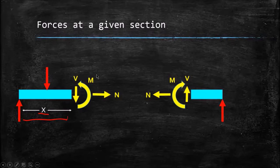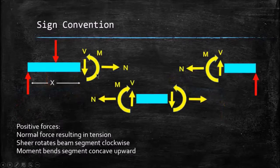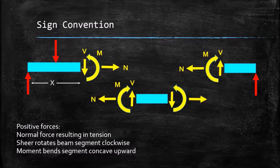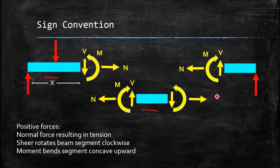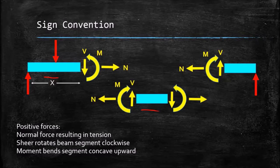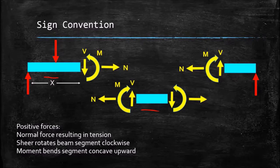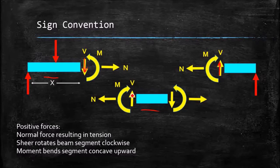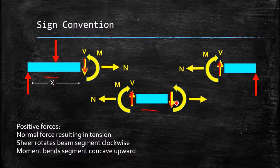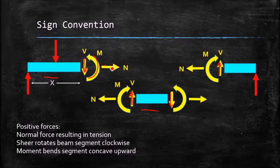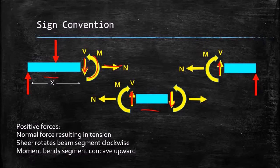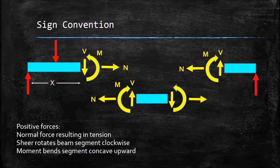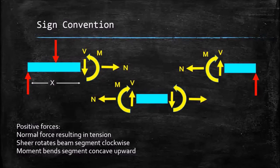But before we go off into forces, I should comment on the sign conventions. We have a beam cut into three pieces, kind of a left, a center, and a right section, and we have the shear forces drawn, and we have the moments, and we have the normal forces, and these are all drawn in the positive direction, assuming our positive sign conventions.